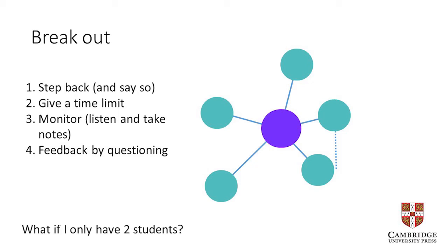If you're monitoring effectively, go into your breakout rooms with your camera off — if your face appears large in the corner it disrupts the group. Sneak in, take some notes, sneak back out, and use those notes to fuel your review. For very small sessions — even just two students — you still need to break the connection. Step back, make it a clear task rather than just 'have a chat', give them a time limit, monitor carefully, and then feedback by questioning when you come back together.